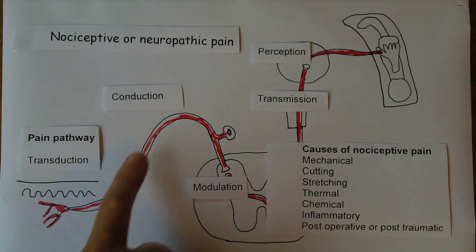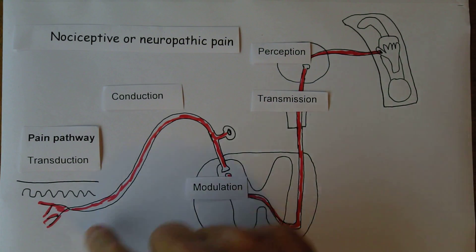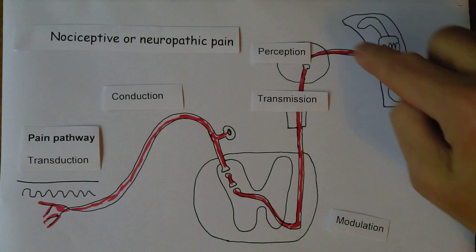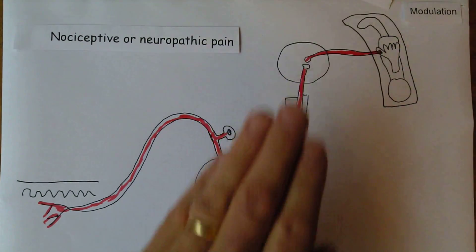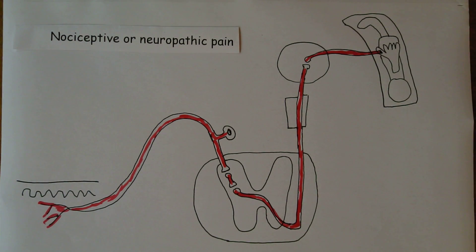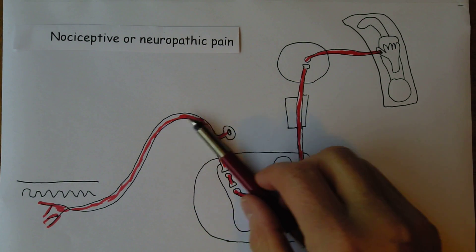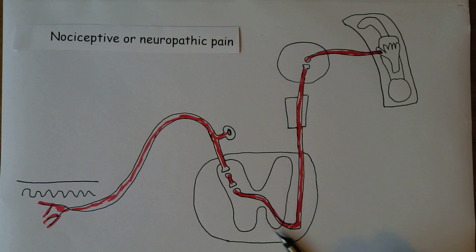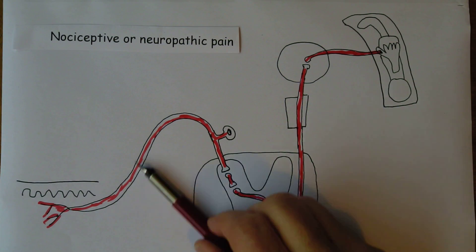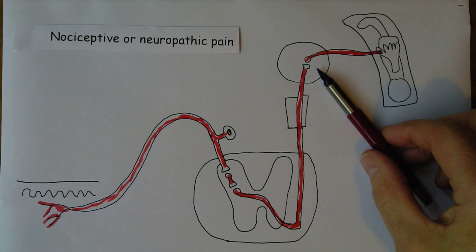All of these things affect the nociceptors, and the whole point of this system is that it warns us about tissue damage. That impulse is conducted, transmitted, and there's perception and modulation to make sure the pain is appropriate. But what could happen is that pain is actually generated by the thalamus — if a nerve fiber or the spinal cord generates impulses when it shouldn't, those still travel up this pathway.